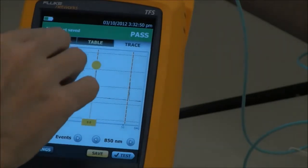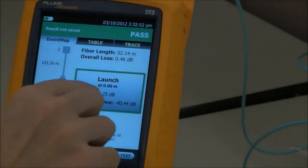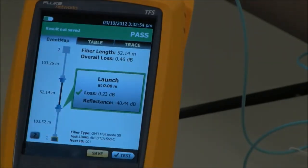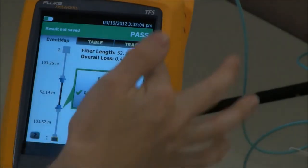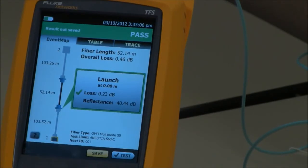But what about our event map? That's still showing 0.23 dB. And our reflectance is still around about minus 40. That's not exactly the same value as we had before. We have a little change in reflectance there. But our overall result has not changed.